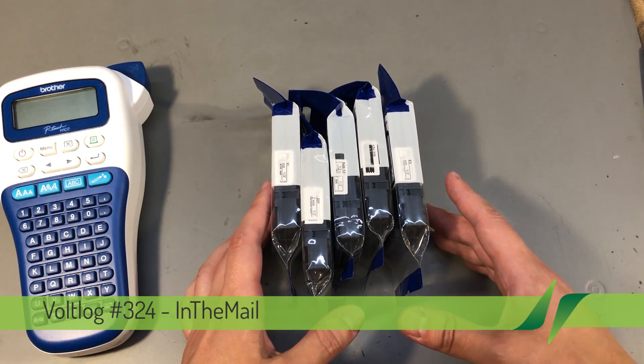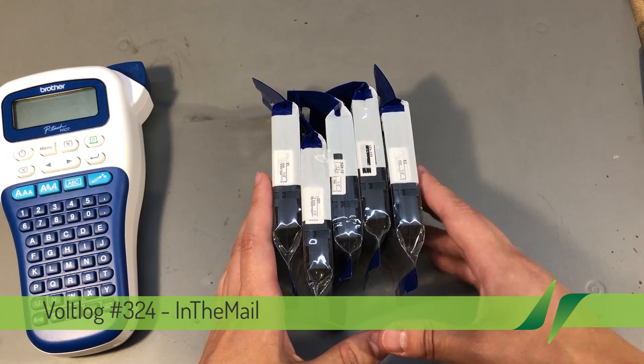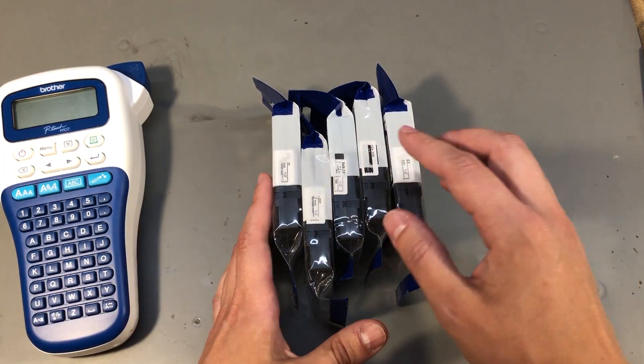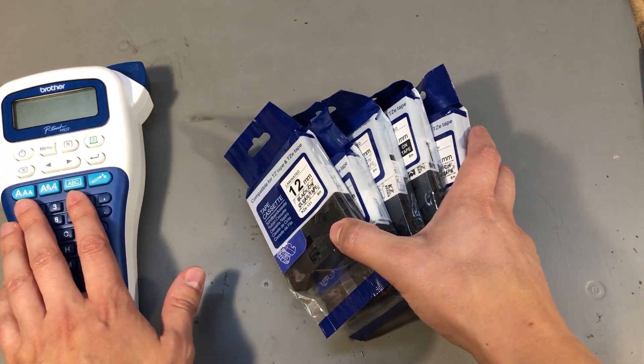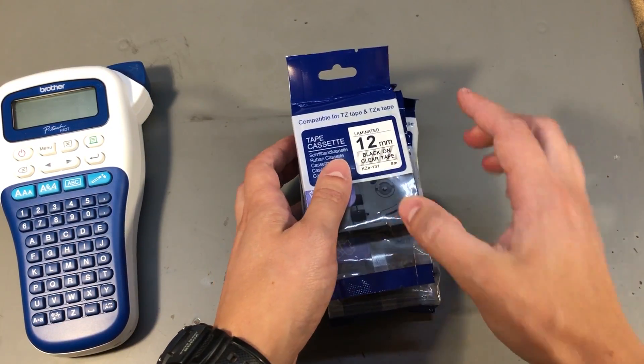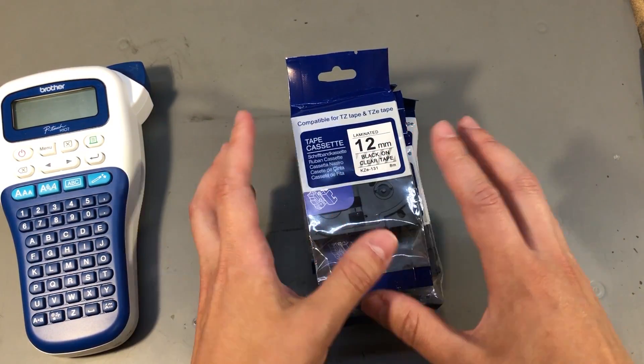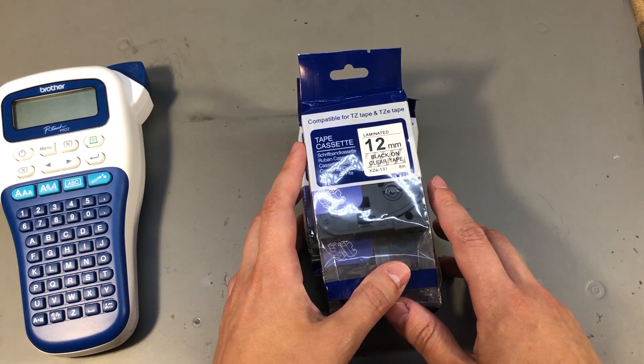We have a selection of different items received in this mailbag video and I'm gonna start with this set of replacement cassette tapes for my label printer. You've seen me order these before but now I got some different variations which I thought would be interesting to try.